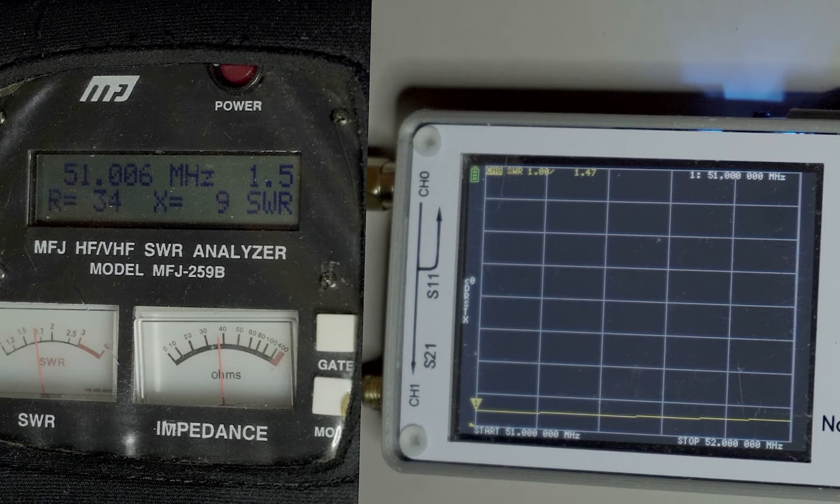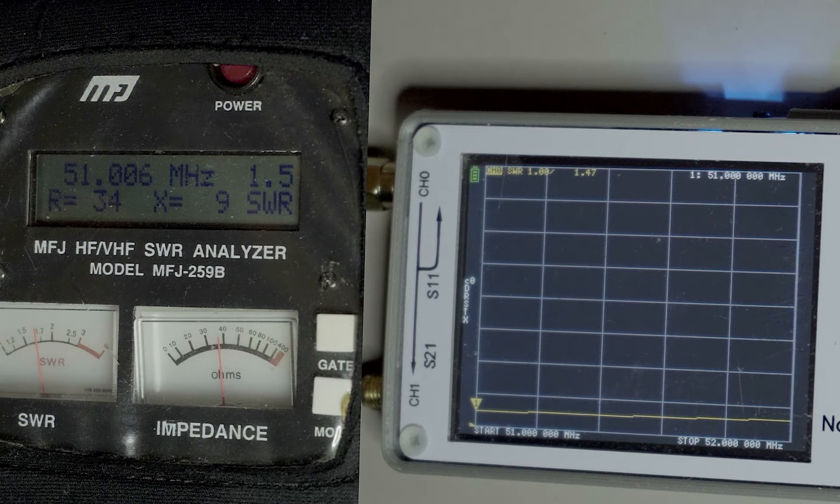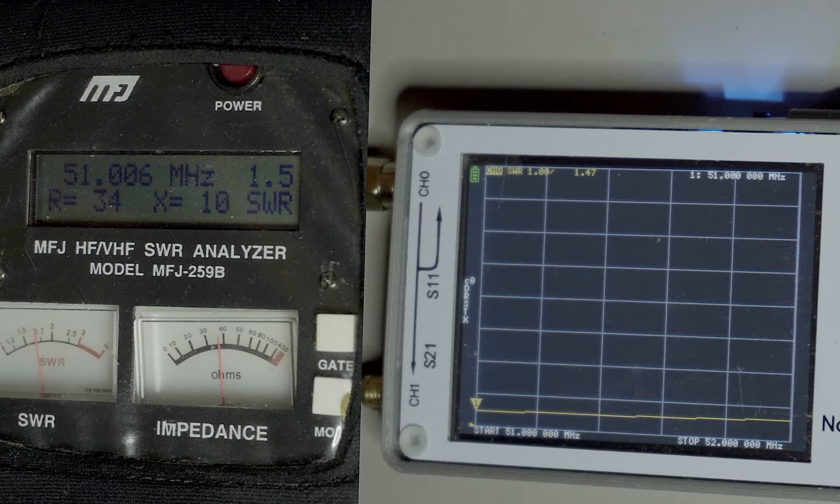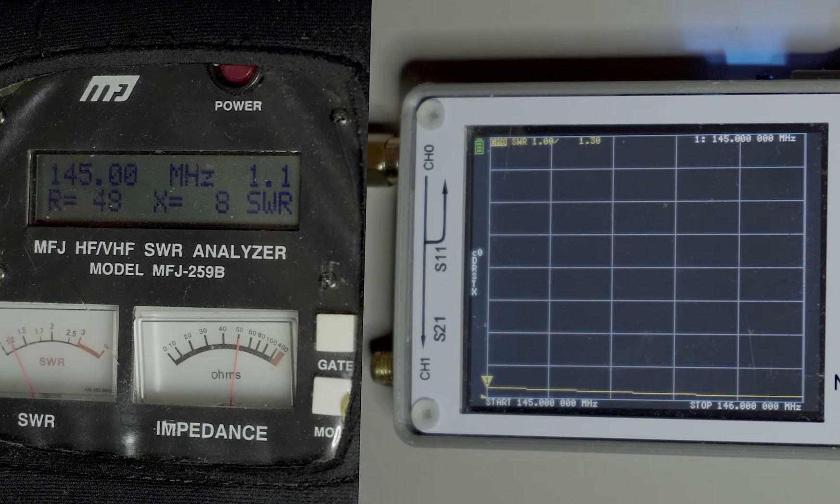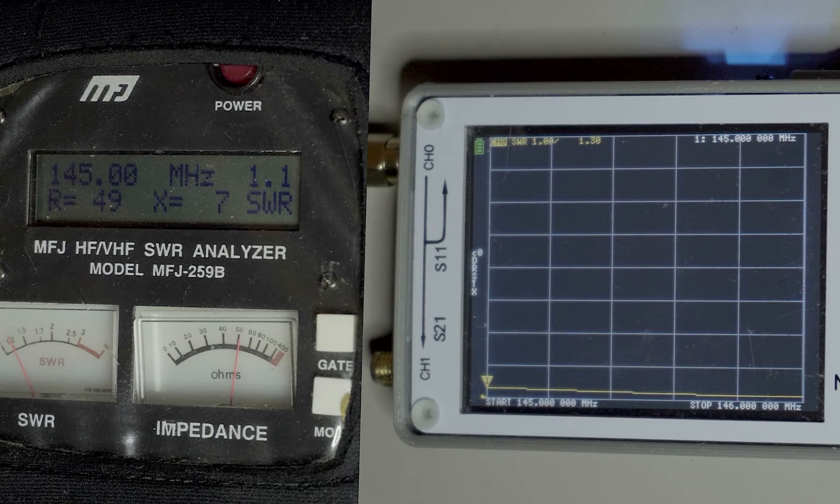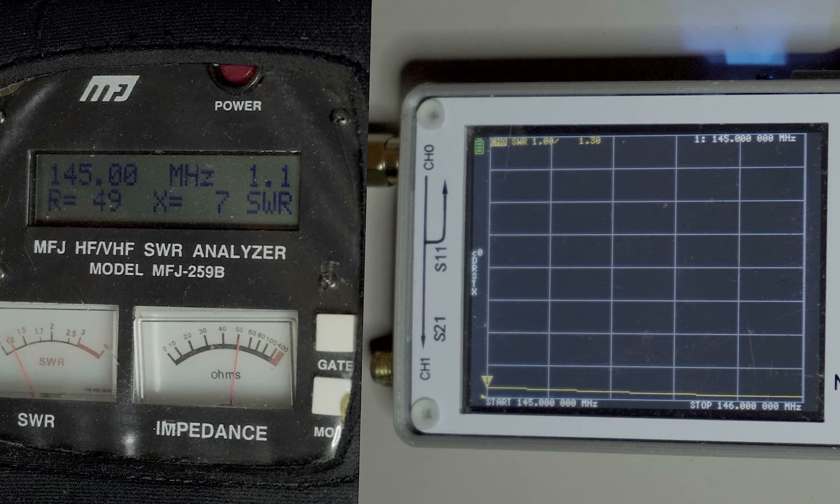Now we're on to 6 meters with the MFJ at 1.5 SWR, and the Nano VNA at 1.47. And lastly, 2 meters, 145 MHz. The MFJ reads 1.1, and the Nano VNA reads 1.3.